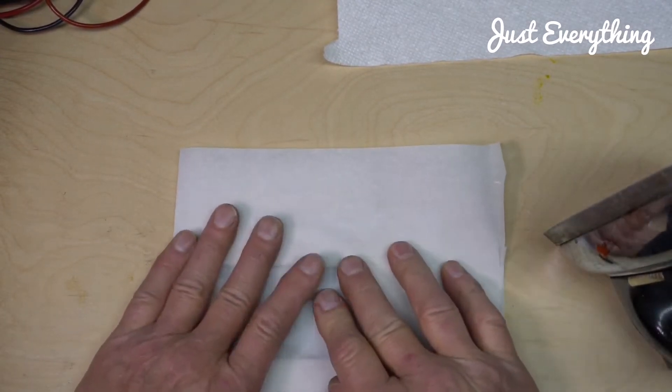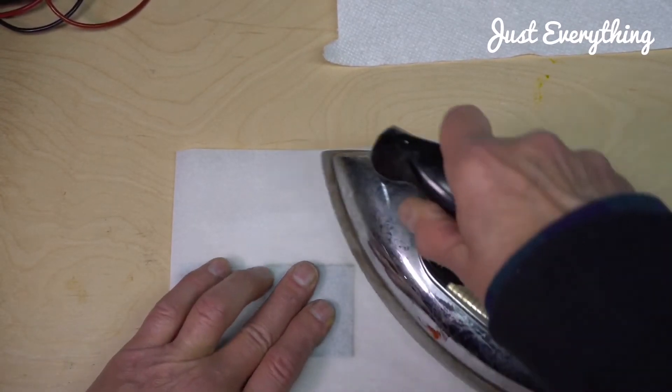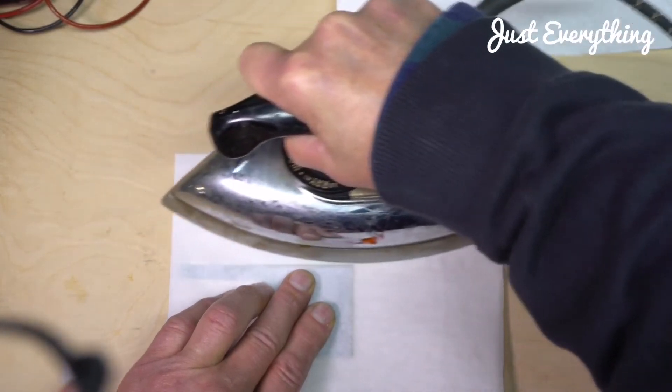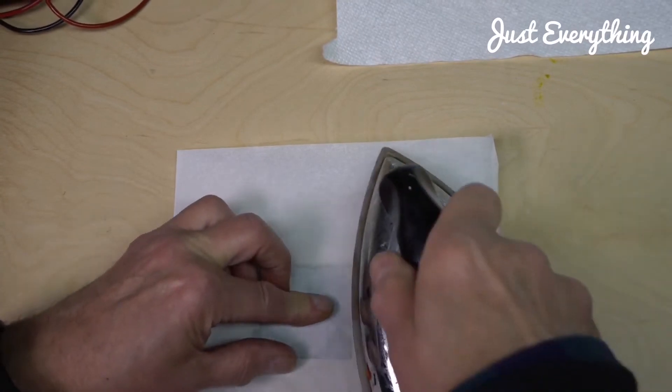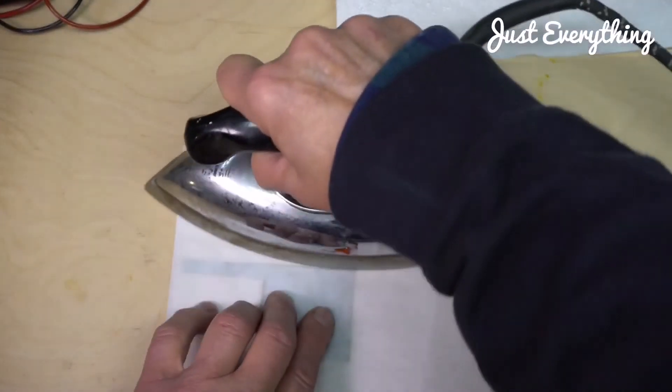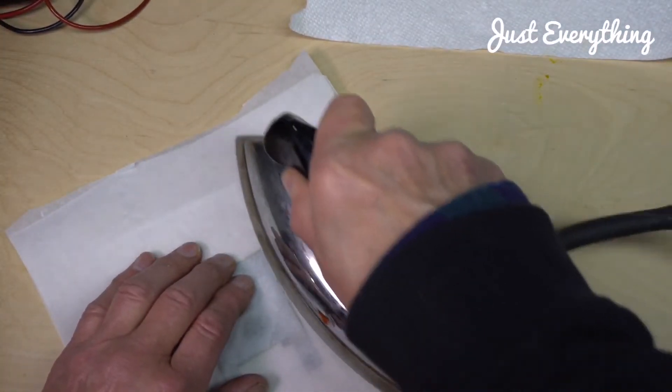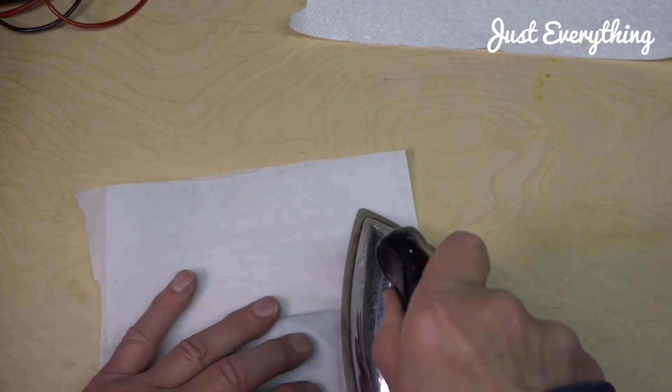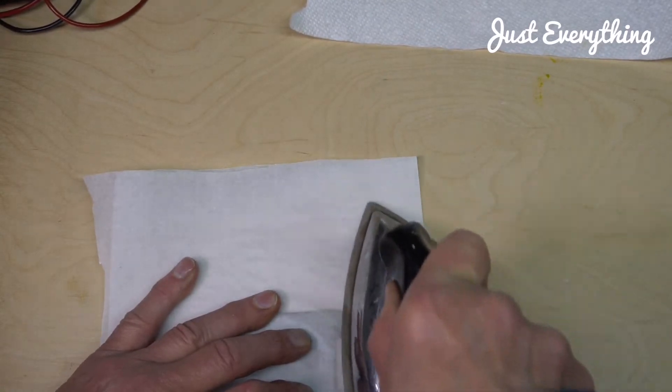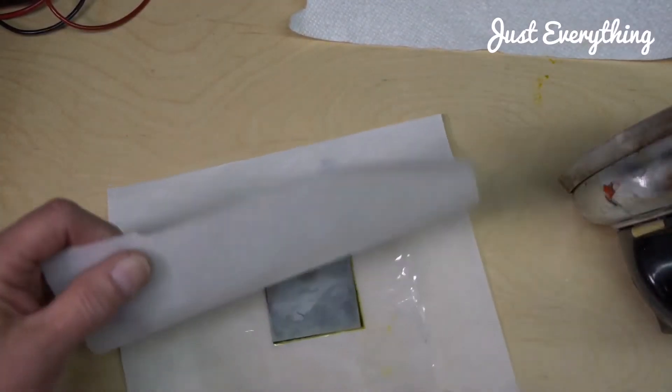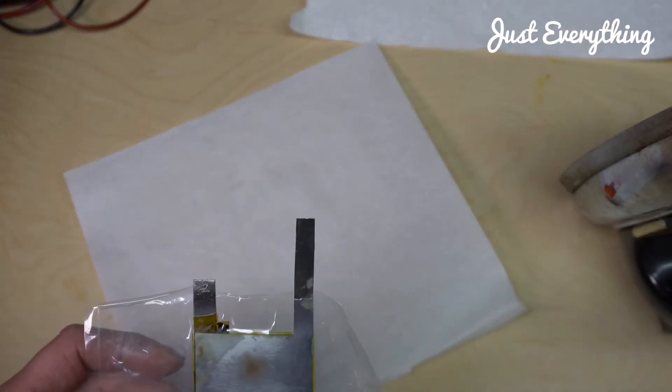So now you've got to make sure that you have your irons at the right temperature. And you just go around the edges, not on the cell itself, but around the edges. And that's it. Just trim it off and we're ready to test.